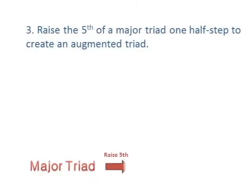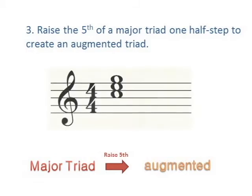If you want to make an augmented triad, start with a major triad and raise the fifth by one half step. C, E, G is a major triad. By raising the fifth, we find C, E, G sharp is an augmented triad.